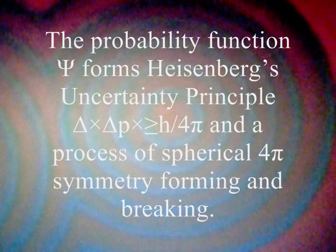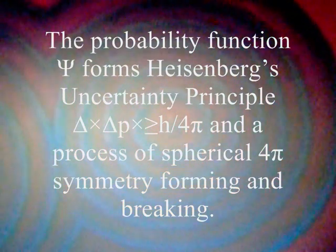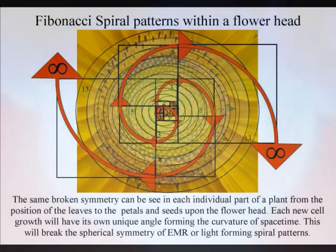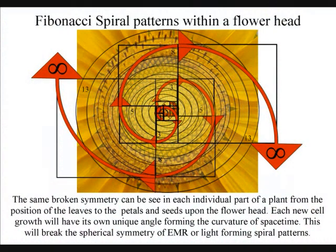The spontaneous emission of light forms the flow of time, forming greater degrees of freedom for the spontaneous flow of entropy. This can be seen as a universal process of spherical symmetry forming and breaking. When the spherical symmetry is broken, energy levels cascade down, forming the fibulary spirals that we can see almost everywhere in our everyday life.